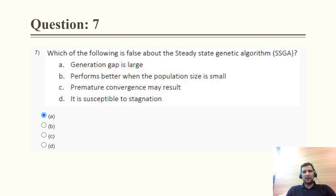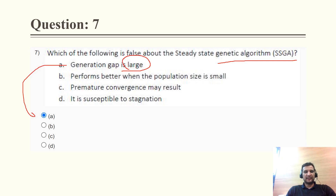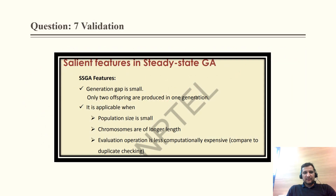Question 7: Which of the following is false about the steady state genetic algorithm (SSGA)? The false statement is 'generation gap is large,' because in SSGA the generation gap is small. The other statements — performs better when population size is small, premature convergence may result, and it is susceptible to stagnation — are all correct statements. So the correct answer is A.